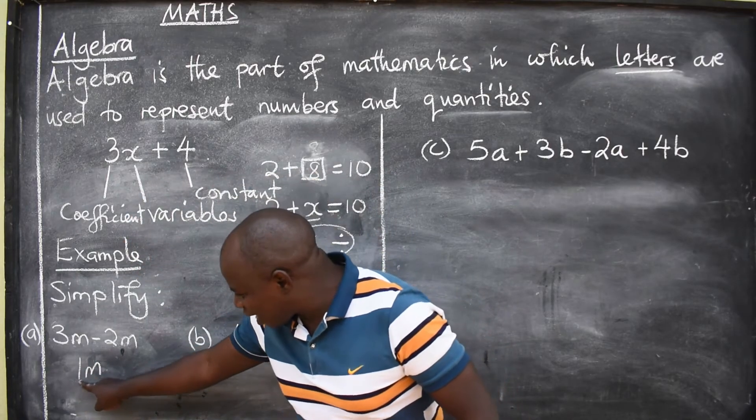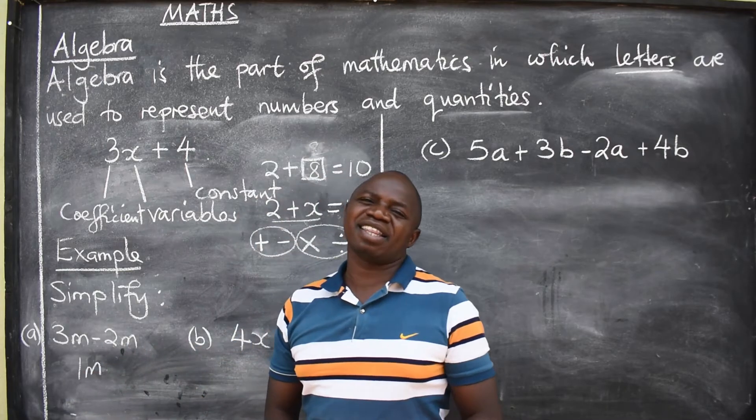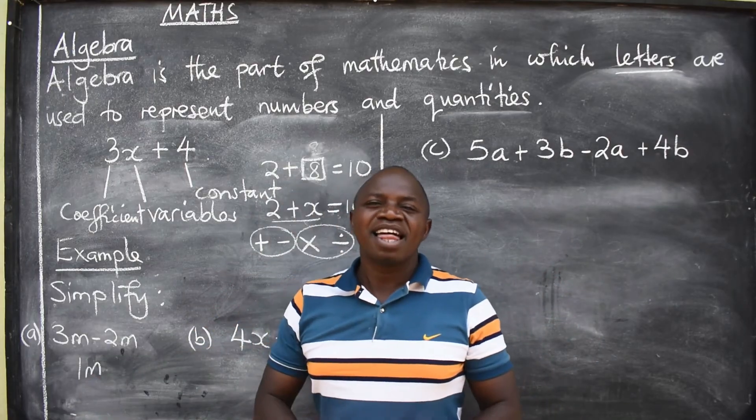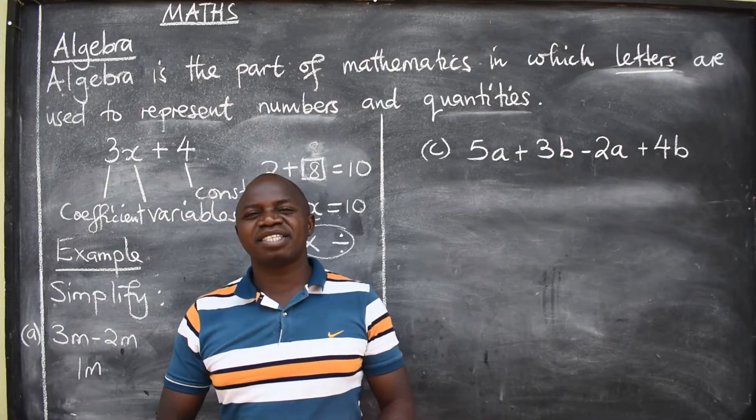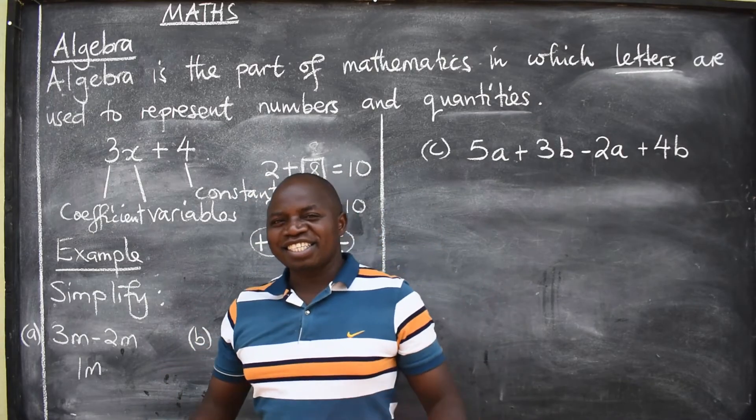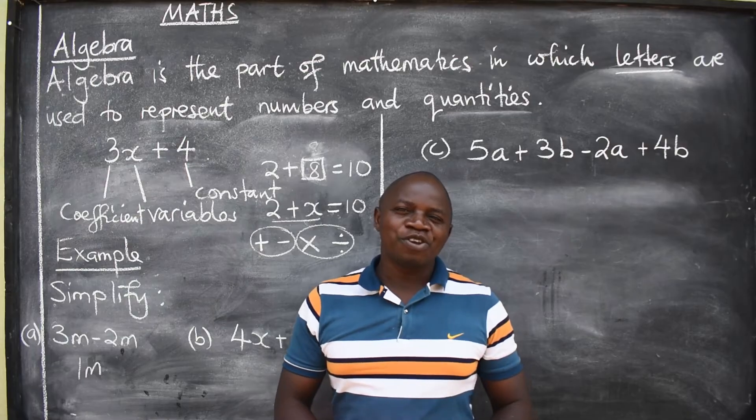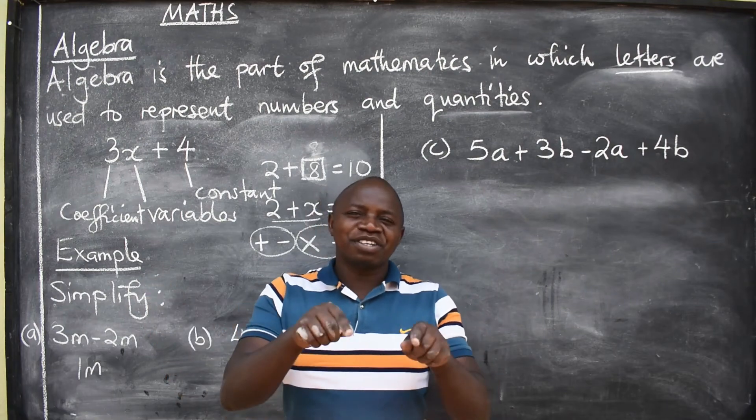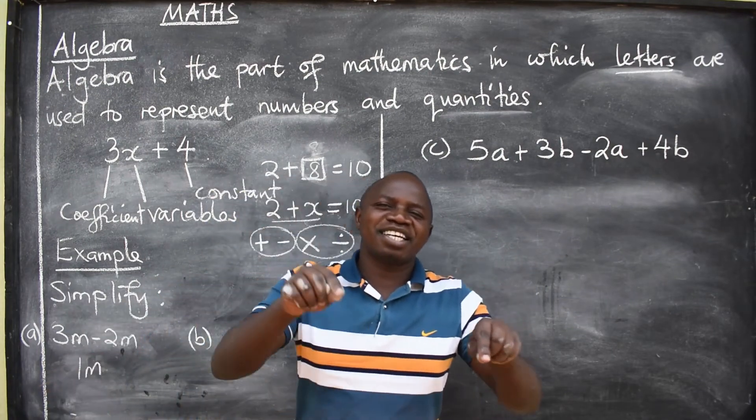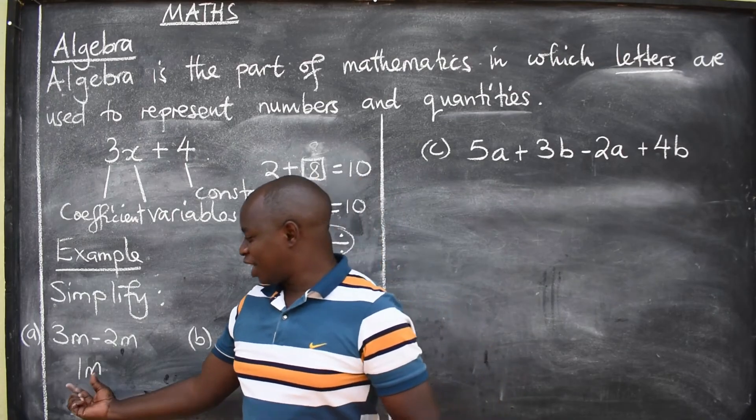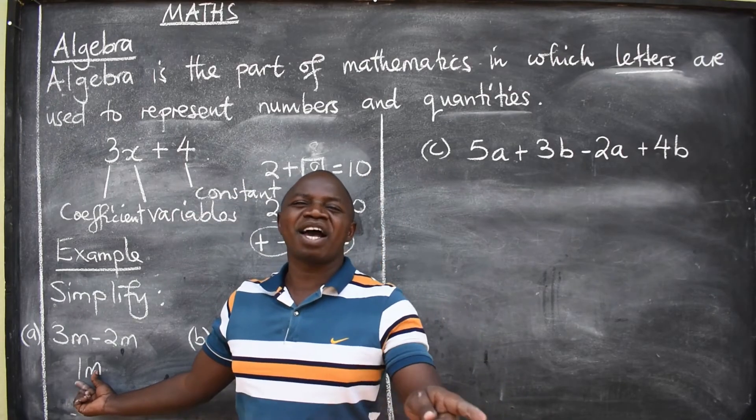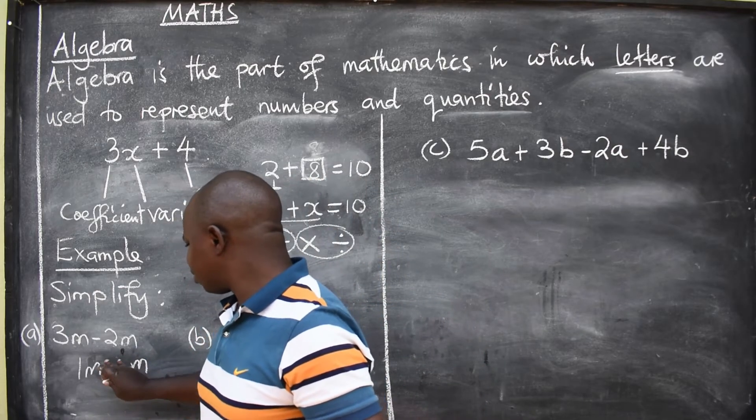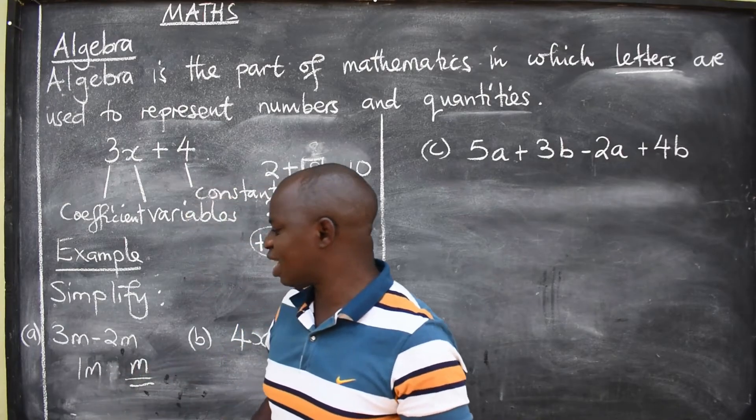But is it correct for you to write like that? No. I do not want you to be writing 1M. This in mathematics is called repetition. Just like in English language, when you say repeat again. No. We don't say repeat again because repeat and again, you're talking about the same thing. So this is repetition, 1M. But what would be the correct answer? You just say M. The answer there is M.